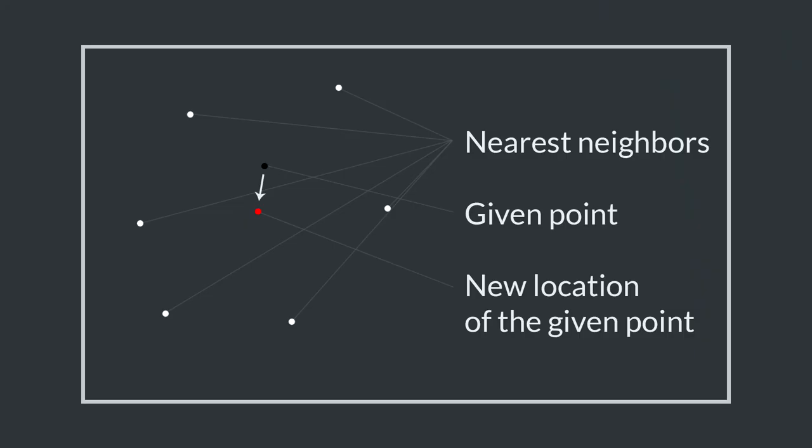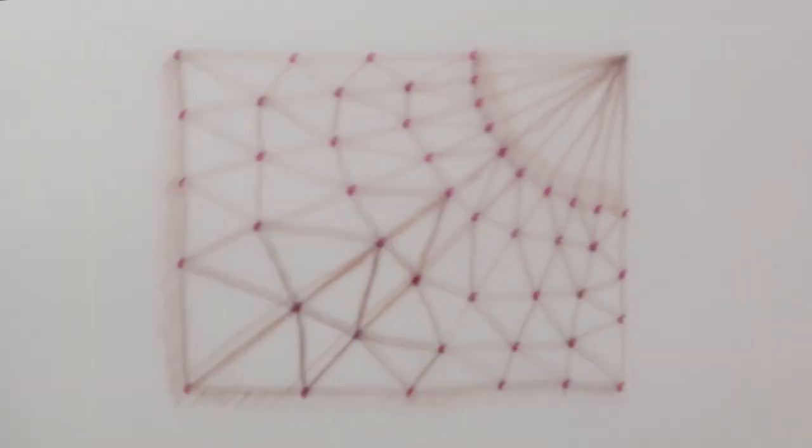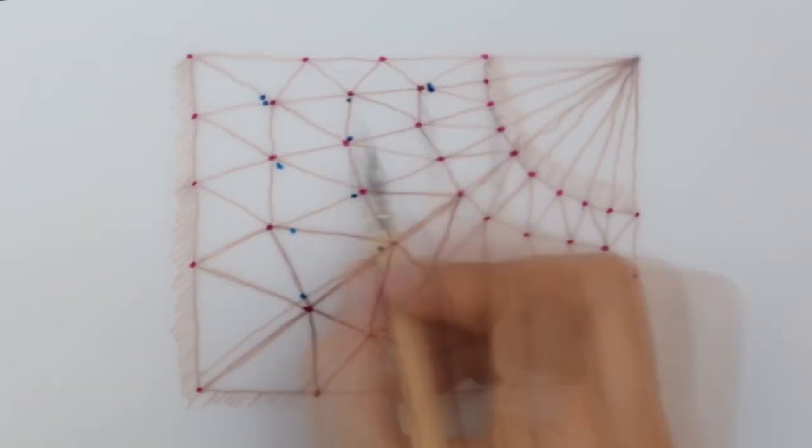The rules of this algorithm are quite simple. You take one point, then you find all its nearest neighbors and calculate the position in the middle of all these neighbors, and finally you move your point there. Then you have to do the same for all points, doing one point at a time.